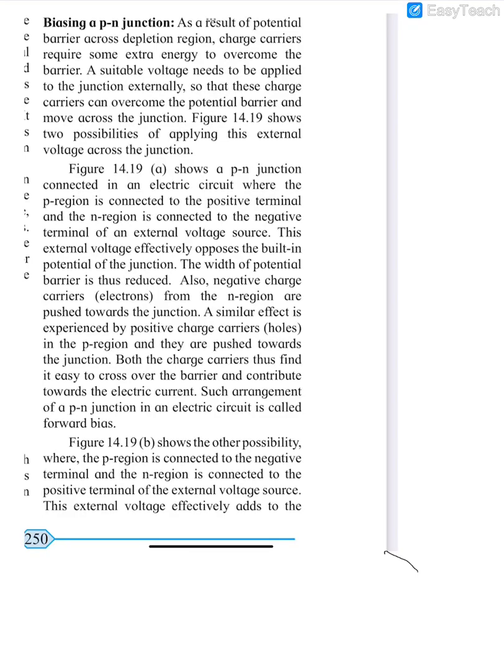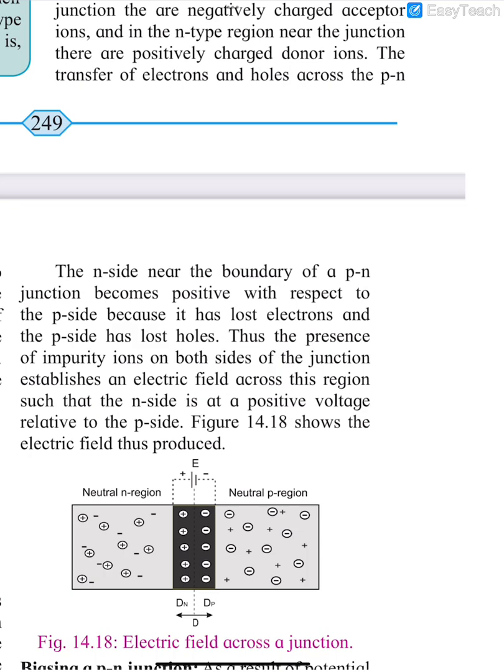PN junction biasing. As a result of the potential barrier across the depletion region, charge carriers will require extra energy to overcome the barrier. Charge carriers cannot overcome this barrier on their own. Externally, an energy supply has to be applied. The potential barrier has to be overcome, and eventually the potential barrier is going to be reduced.